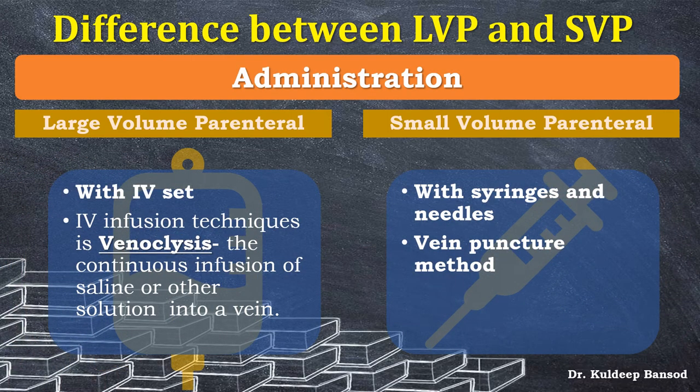Another difference is the administration method. Large volume parenterals are administered with an IV set using the venoclysis technique — the continuous infusion of saline or other solution into a vein. Small volume parenterals are generally administered with syringes and needles using the vein puncture method. To summarize: venoclysis is the method for large volume parenterals, and vein puncture is the method for small volume parenterals.